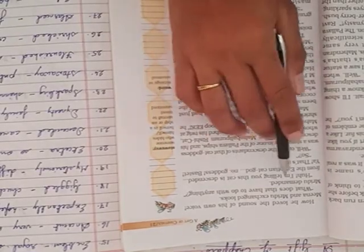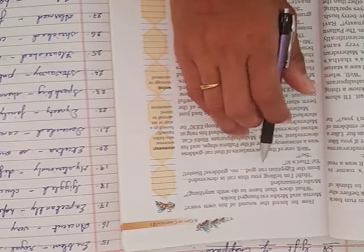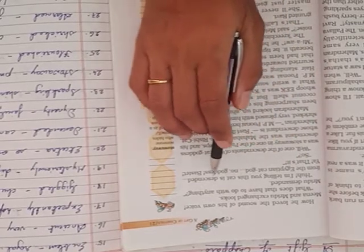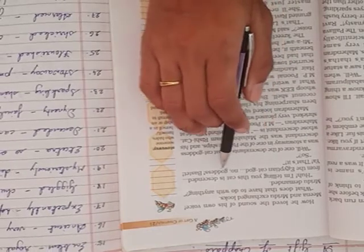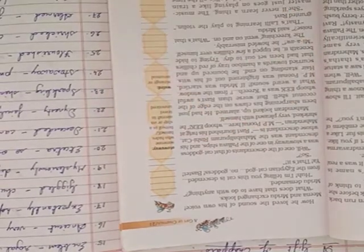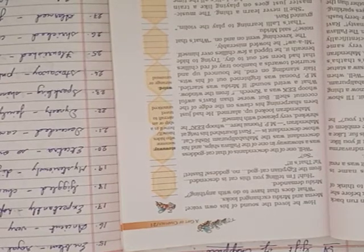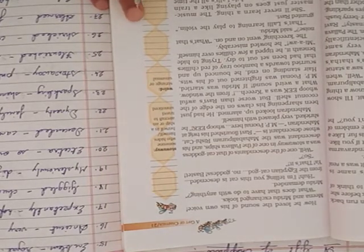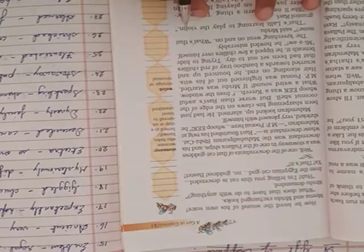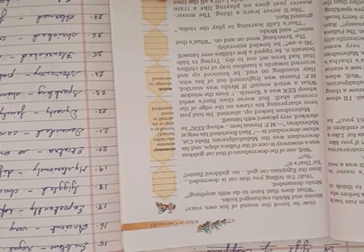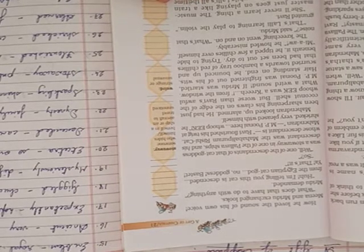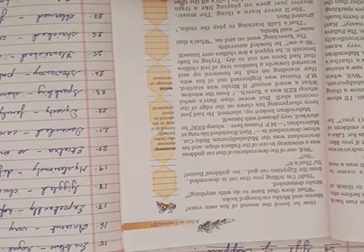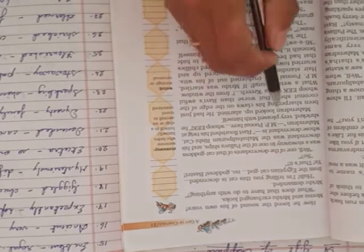What does that have to do with anything? Mridu demanded. Ah, I am telling you that this cat is descended from the Egyptian cat God. No goddess, busted. Yeah, that's it. Ravi was telling about history and he was really feeling great to talk about that. Mina and Mridu were looking at each other and they were having fun over Ravi.